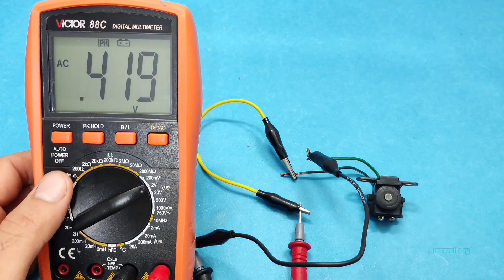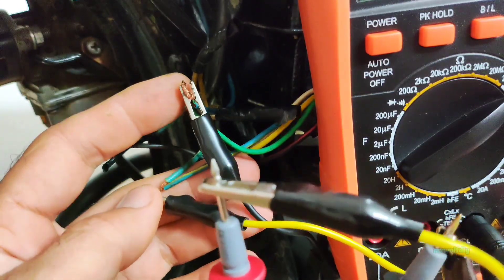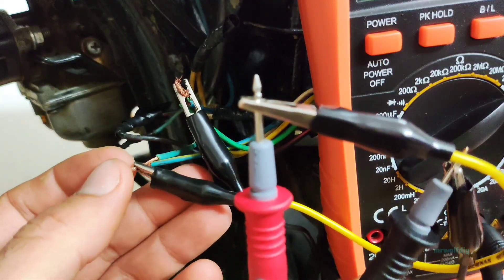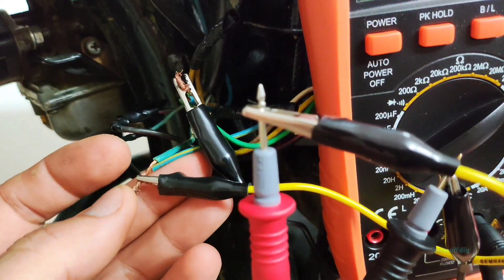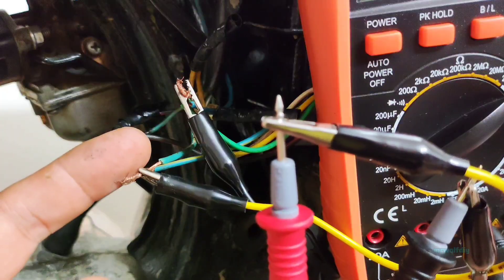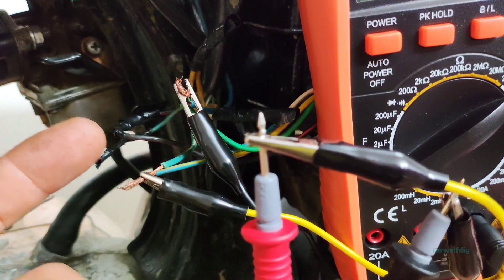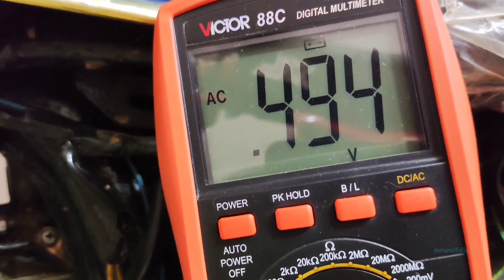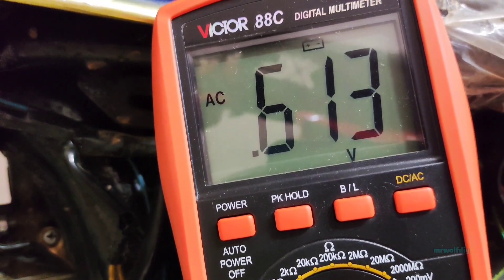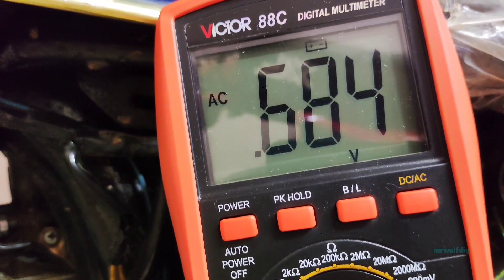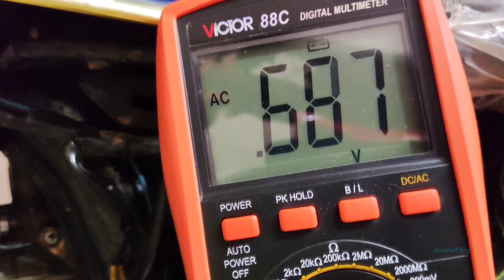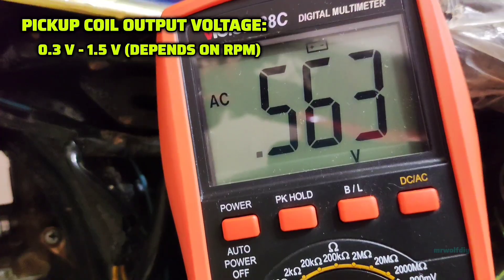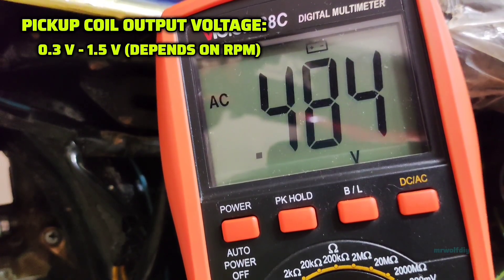Let's show you on the bike. This time, connect the pickup wires back to the wiring and attach the multimeter in parallel with the pickup's wire. Open the ignition switch and start to run the engine.